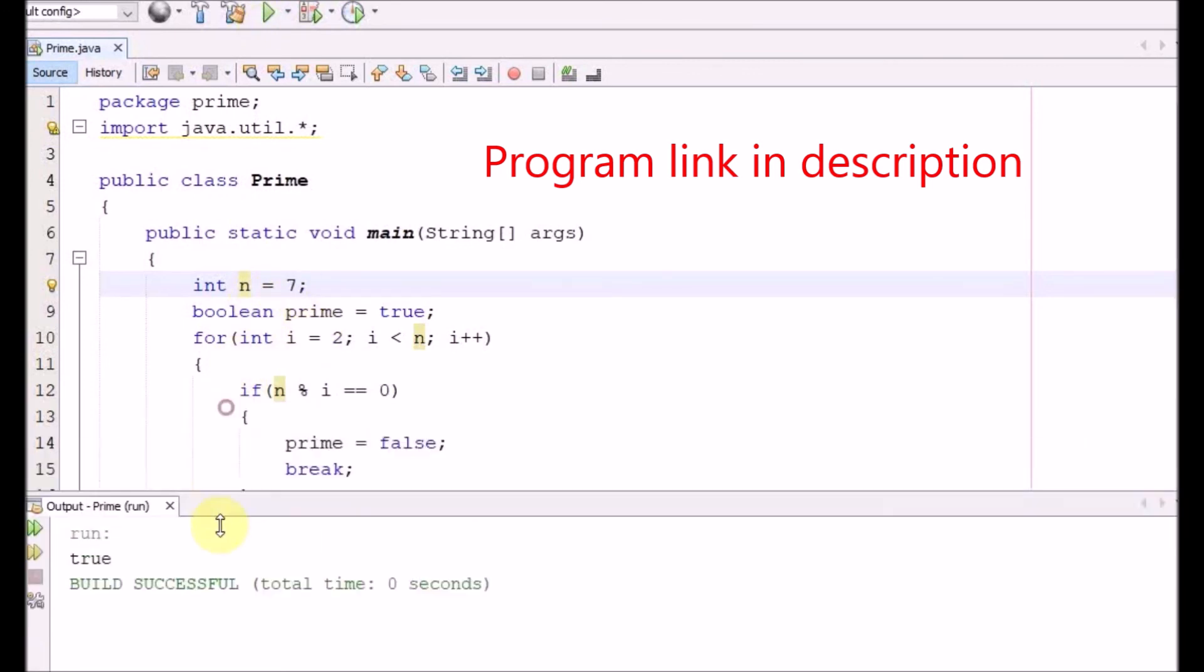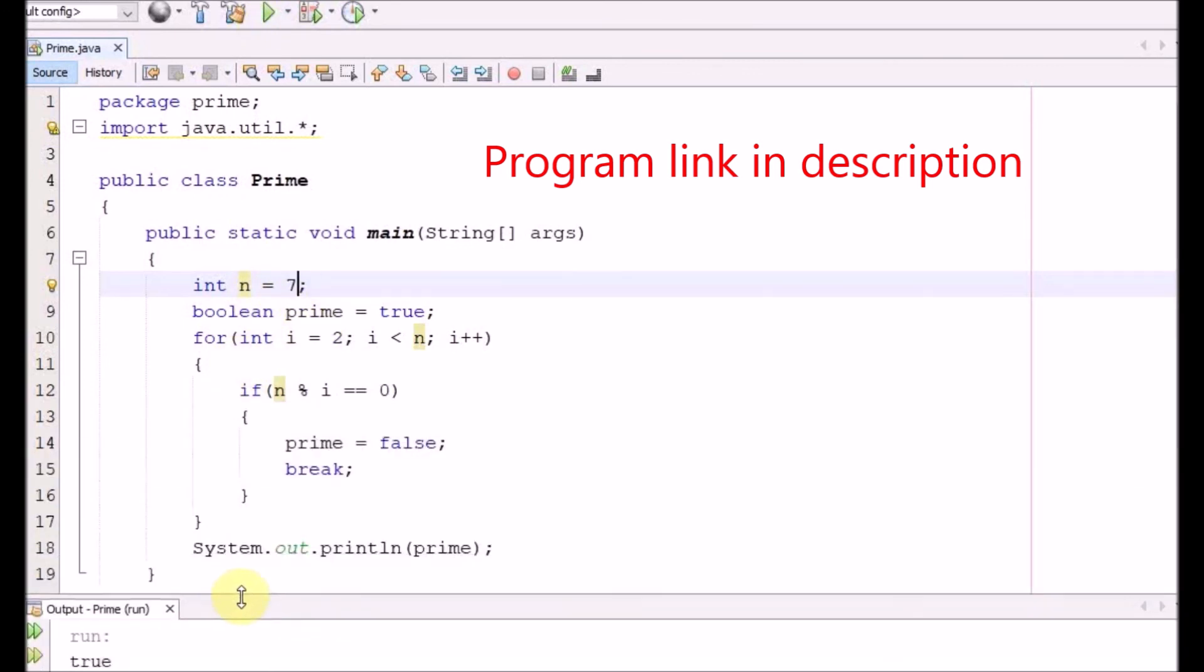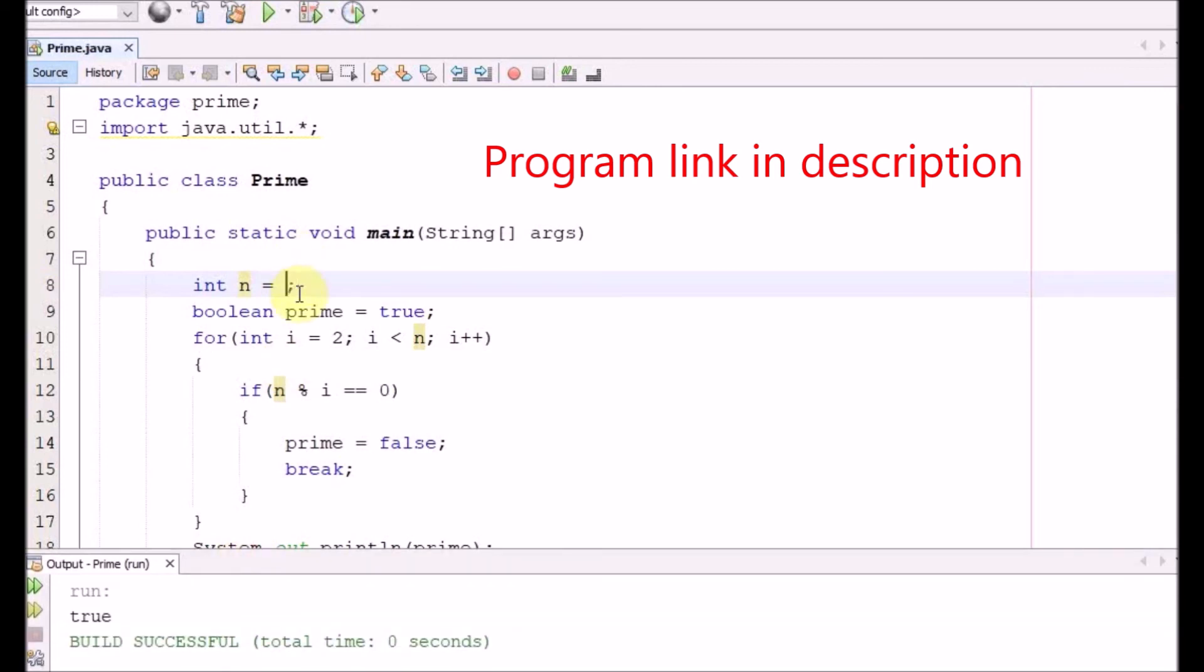So this is the same program which I have explained. So now if we change it to 89, should be true. Now we change to 49 or 40 something. It prints false.